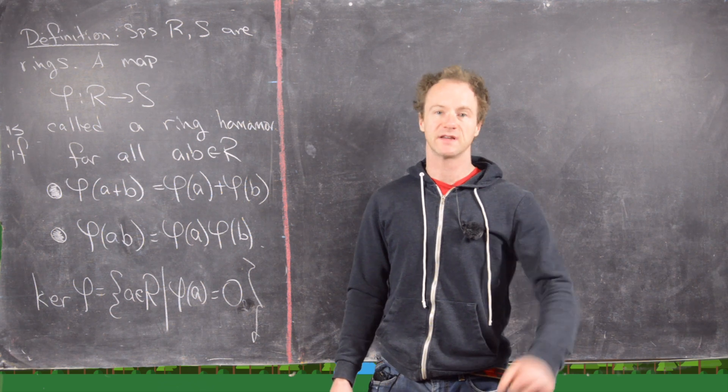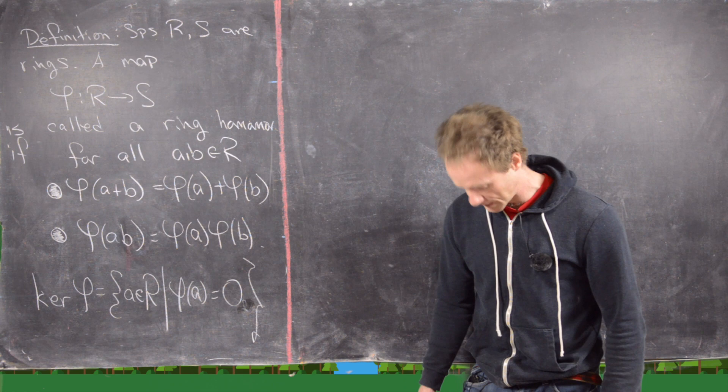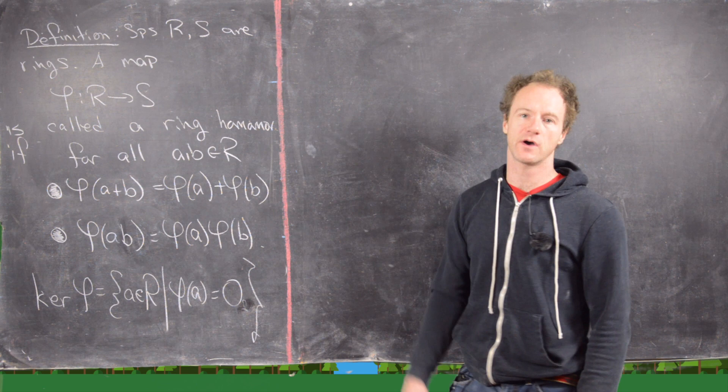Previously we looked at the notion of a group homomorphism, and then we introduced the notion of a ring, and so here we're going to look at a ring homomorphism. So let's go ahead and look at the definition.